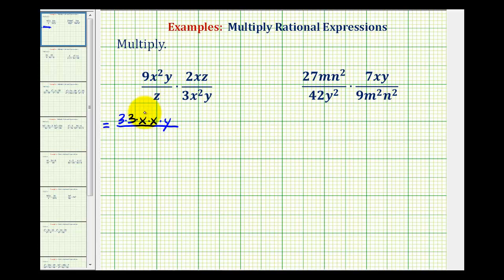The denominator is one factor of z, times 2xz is two times x times z, and 3x²y would be three times x times x times y.